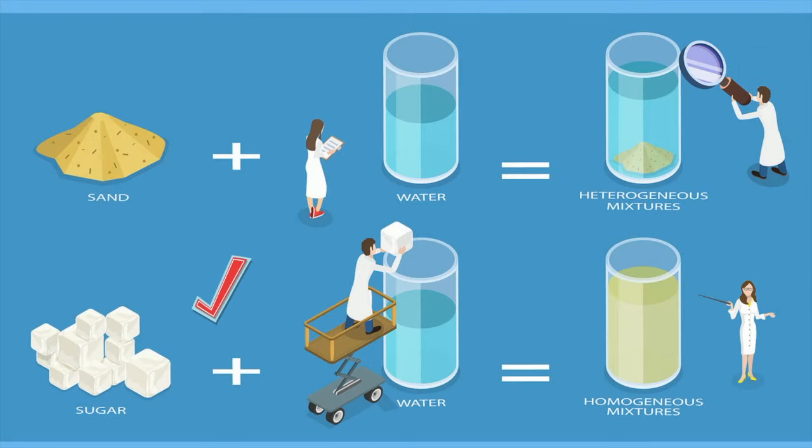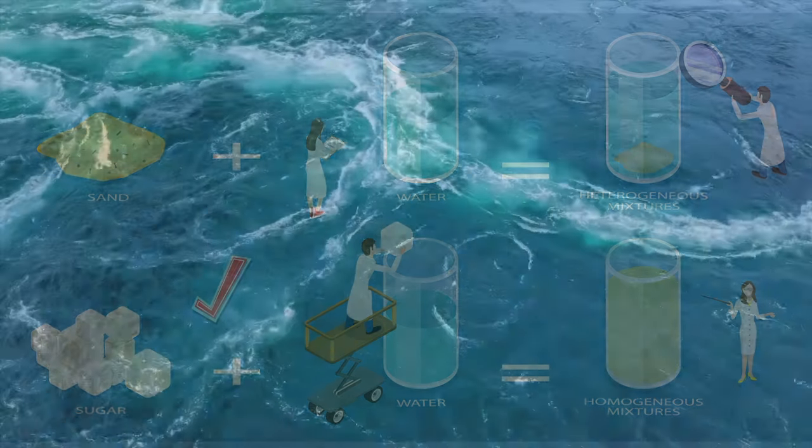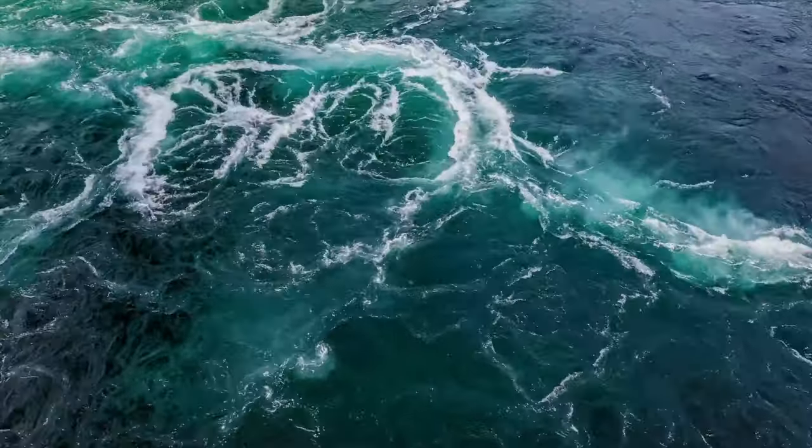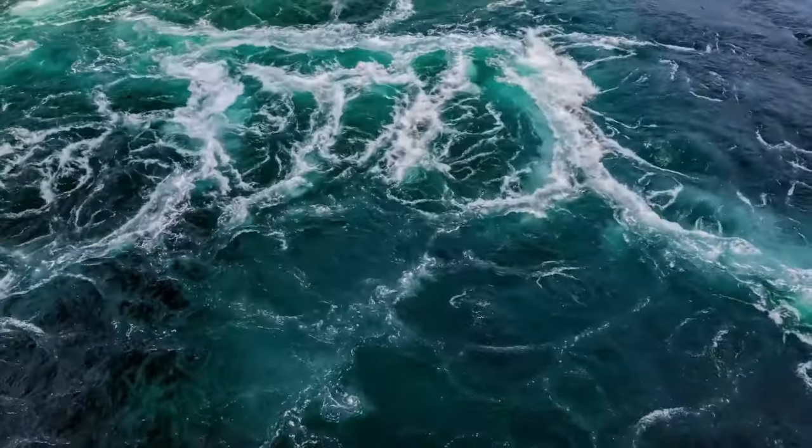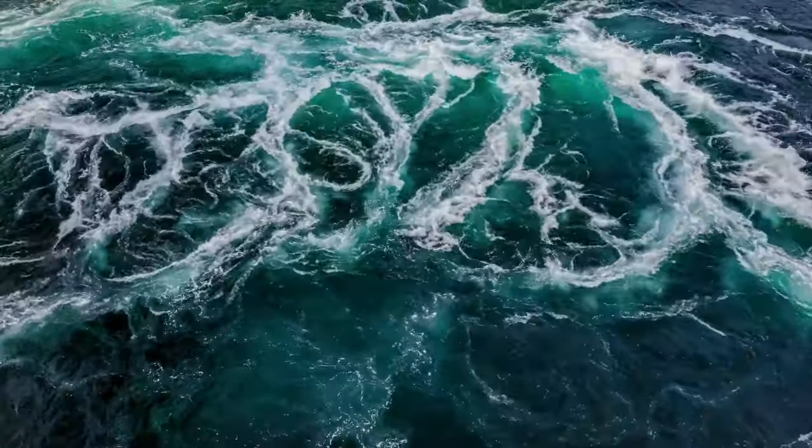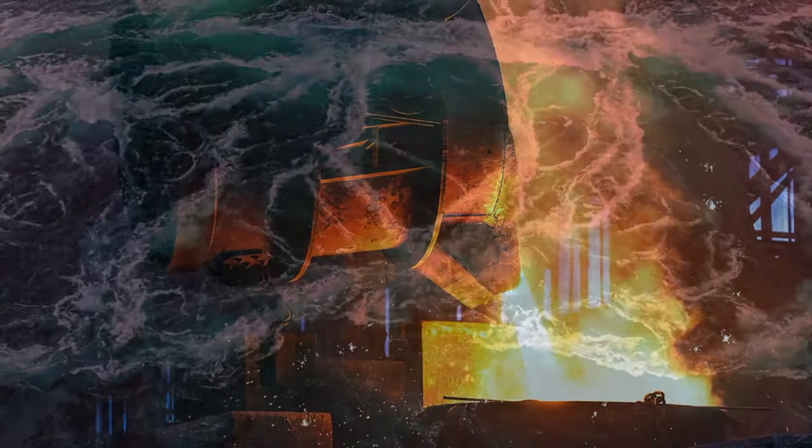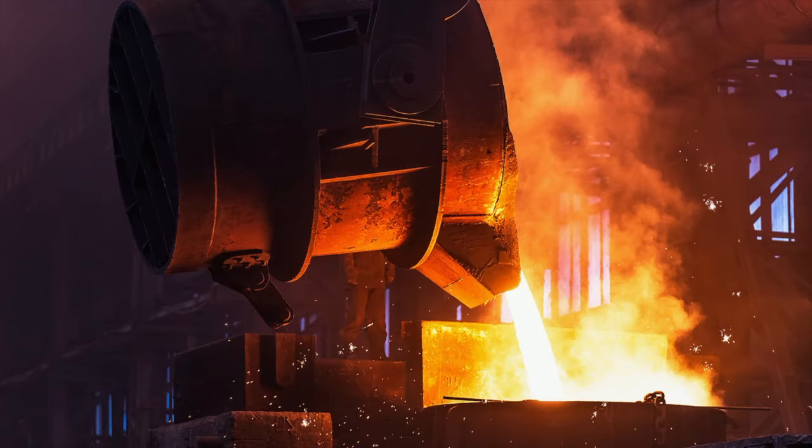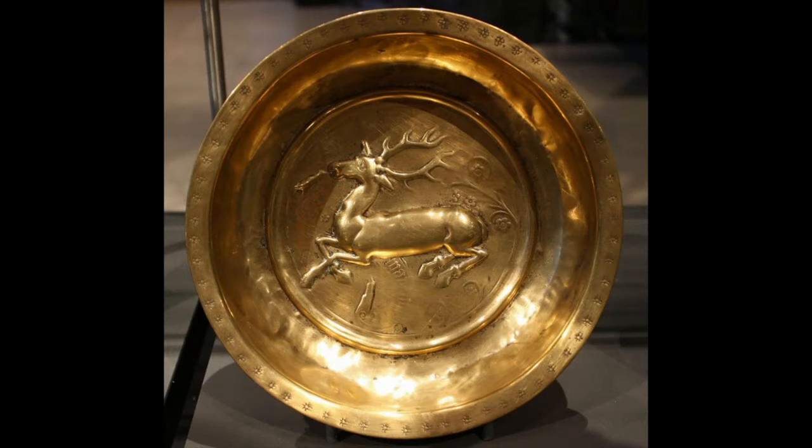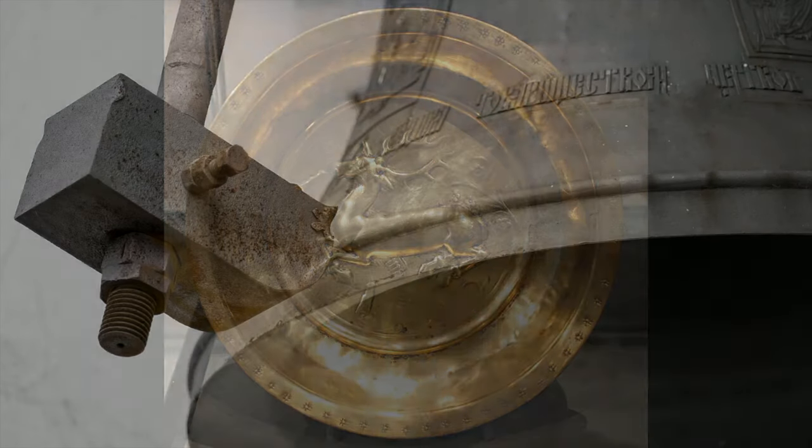A homogeneous mixture, also sometimes called a solution, is a mixture in which the composition is uniform throughout the mixture. Salt water is a homogeneous mixture, because the dissolved salt is evenly distributed throughout. Alloys, which are made up of two or more metals, is another example. This would include brass and bronze.